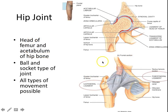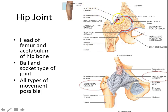Here we have our hip joint. It's going to be much more structurally sturdy based on bone structure — there's a much deeper socket in the acetabulum. However, you'll still have what's known as the acetabular labrum — a little bit of cartilage that extends the capsule to make it just that much deeper, so the head of the femur can sit in there nice and sturdy.